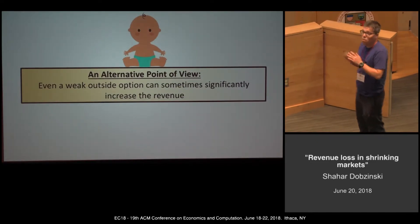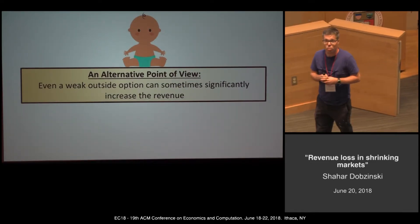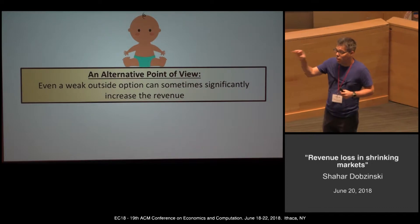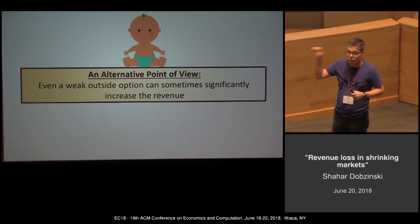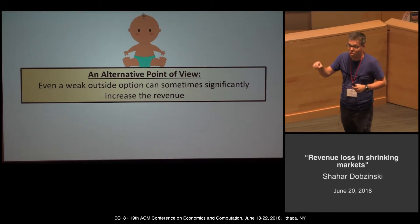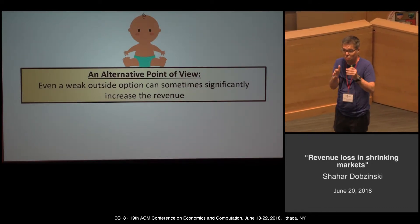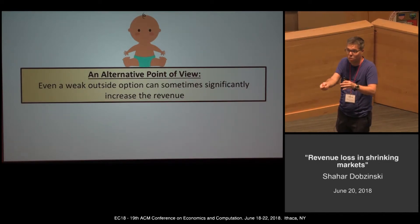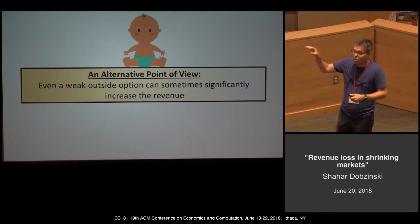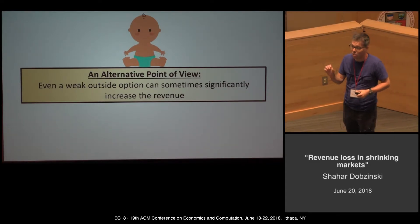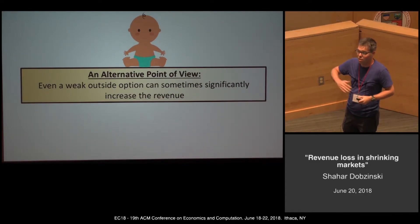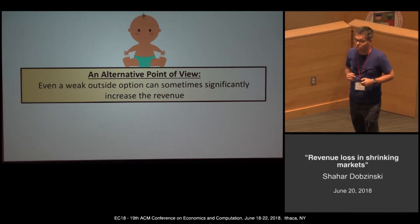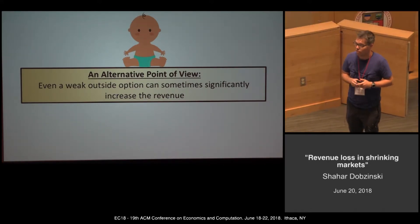From an alternative point of view: suppose the auctioneer has some outside option that is weak in the sense that from each individual bidder you can extract more revenue than this outside option. But this outside option is actually quite important because it can really drive the auctioneer's revenue.